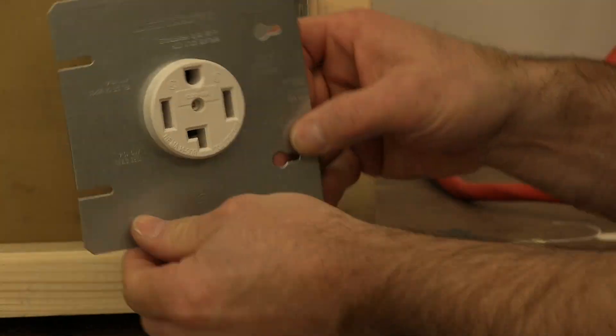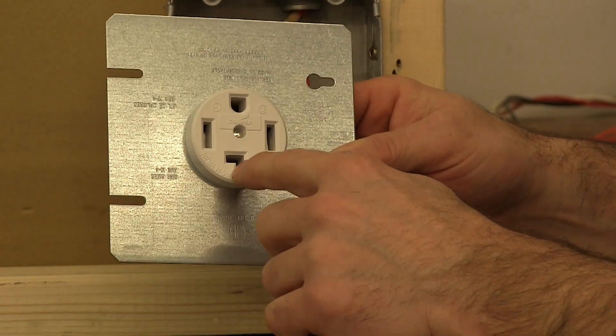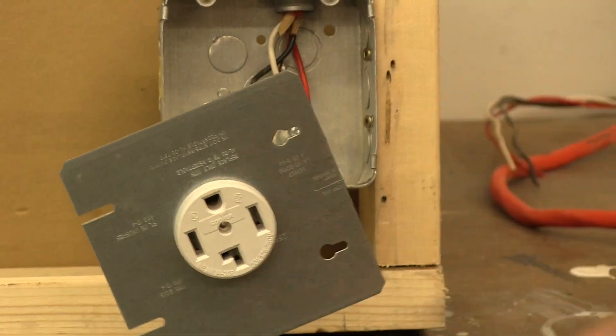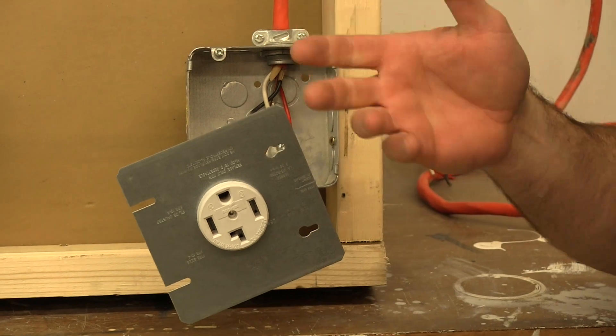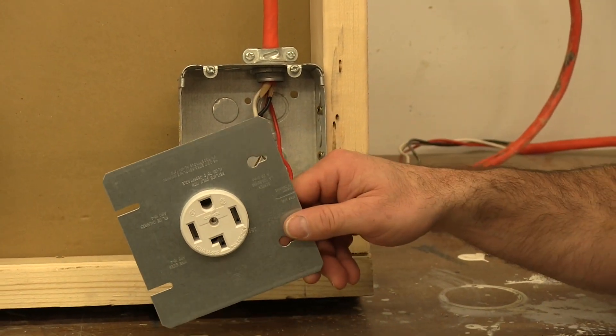A range plug will look very much like this but it doesn't have this L-shaped, I believe it's a straight blade there. So just to keep the two straight when you're purchasing, and generally the packaging will tell you if it's for your stove or for your dryer.